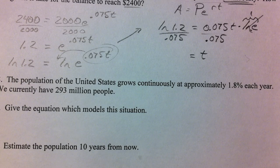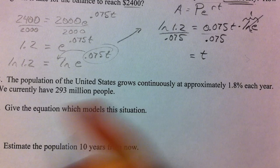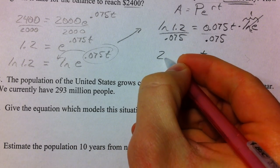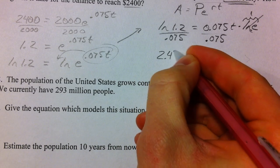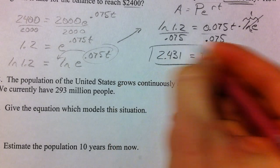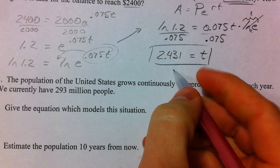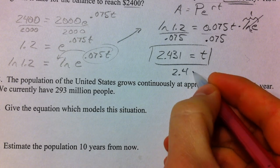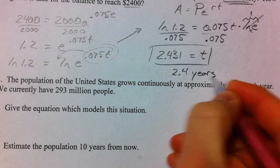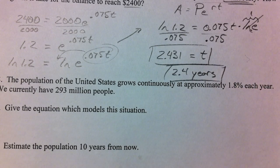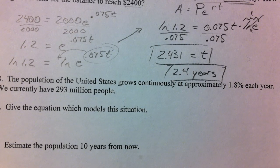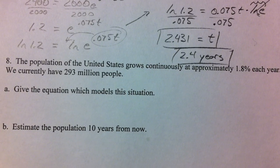Divide by 0.075. And you get what T is. Natural log of 1.2 divided by 0.075. And now, rather than having to guess and check your way through or using your graphing calculator to approximate it, we know that in about 2.4 years, almost 2.5 years, we're going to have $2,400 in the bank.